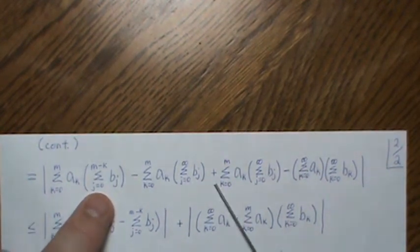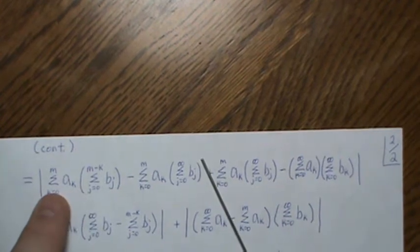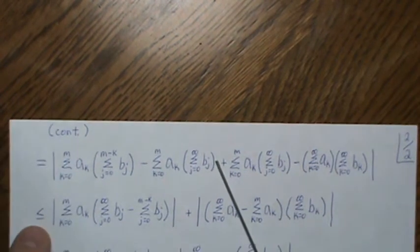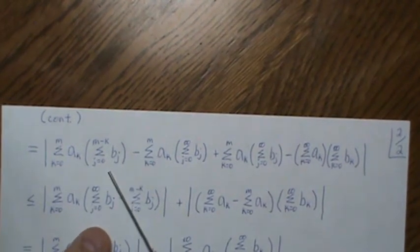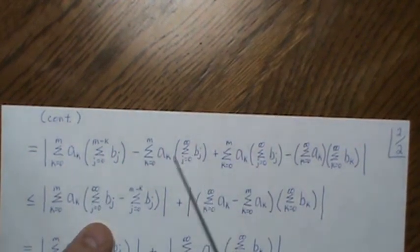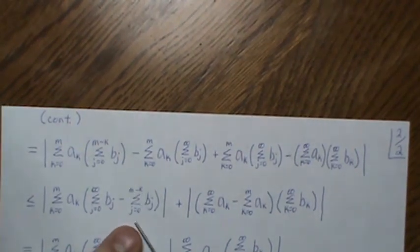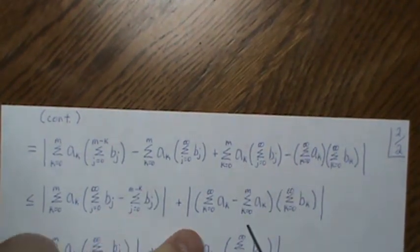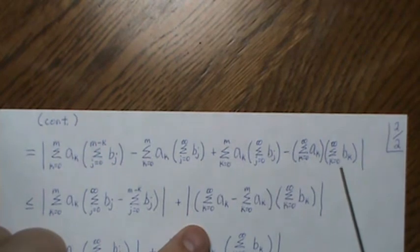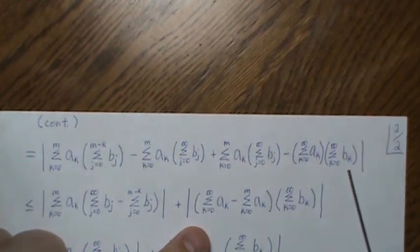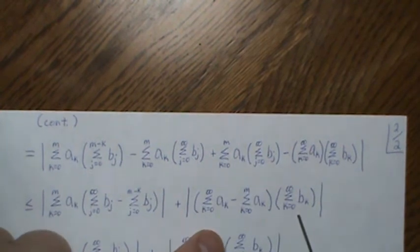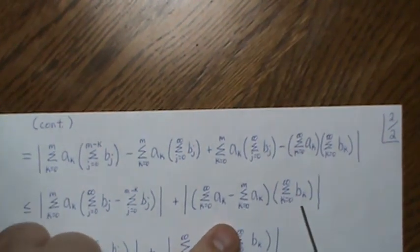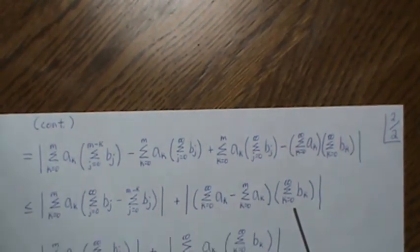all under the inequality but then when we use the triangle inequality then it gets bigger than or equal to. So these two become this, the AK, and then this goes from zero to infinity minus zero to M minus K and then over here we have the infinite series from zero to infinity of BK so we can factor that out and we get this. And then again we use the triangle inequality.